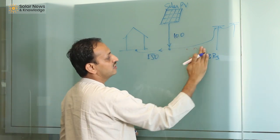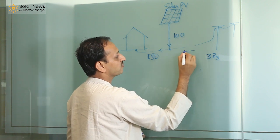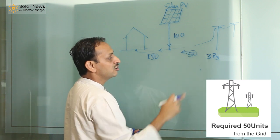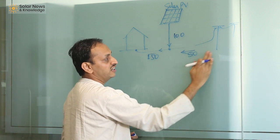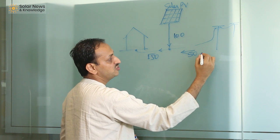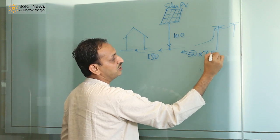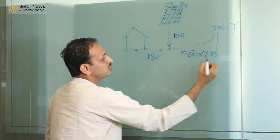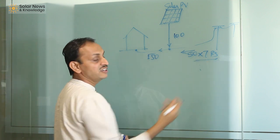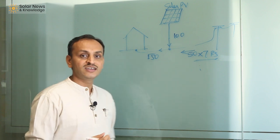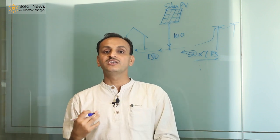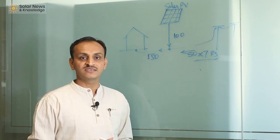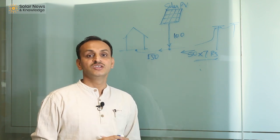...the net you are going to take from the grid is 50 units. But these 50 units will not be charged at the 3 rupees rate you sold at — you will be charged at 7, 8, or 10 rupees depending on the consumer category. So you are getting electricity from the grid at a much higher rate than you are selling solar electricity to the grid, and as a result, in gross metering, you are going to lose some money.